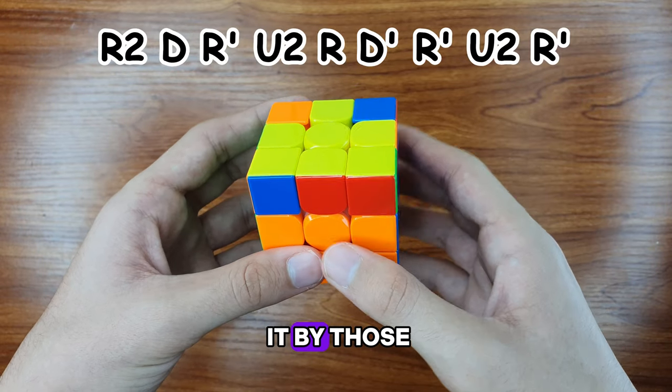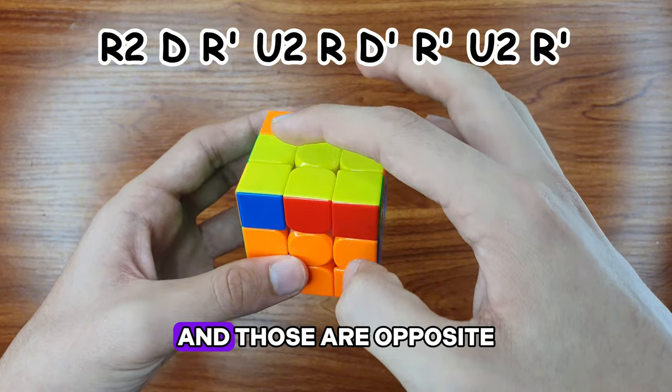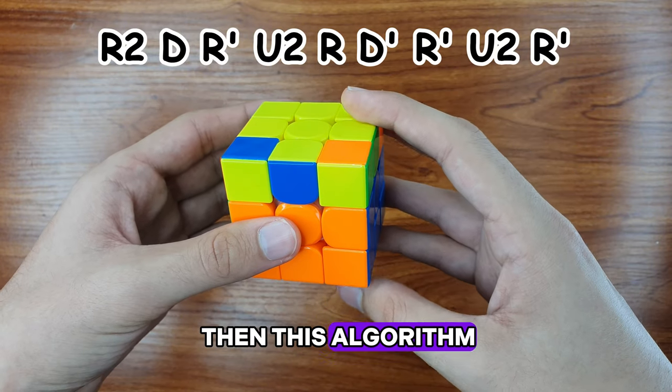Here you can recognize it by those which are the same color and those are opposite. Do a U2 and then this algorithm.